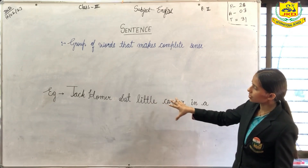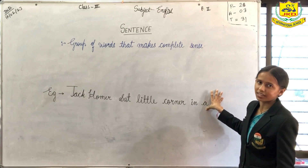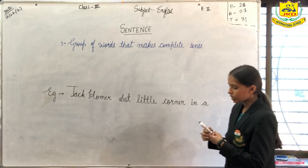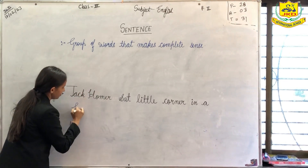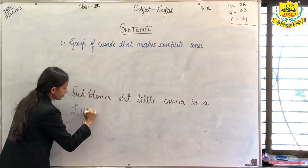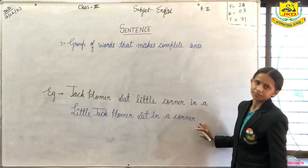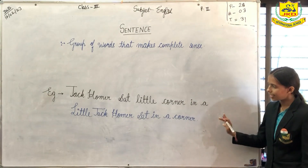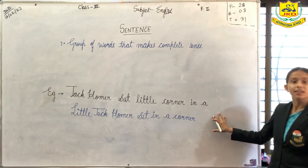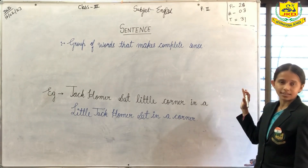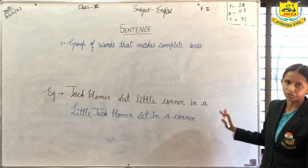Why? Because though these are also a group of words, but are they delivering or giving any information? No. So let me rearrange this again. Little Jack Homer sat in a corner. So can we call this a sentence? Yes. Why? Because from this sentence we are having information that Jack Homer is a boy who is sitting in the corner of a room.